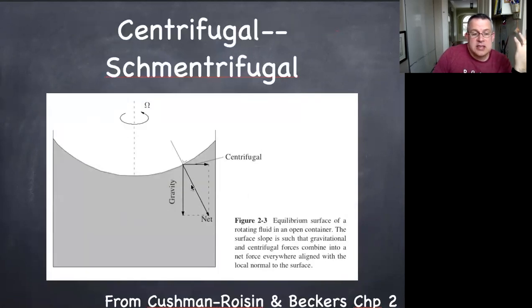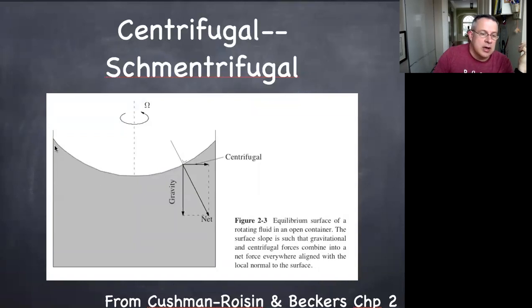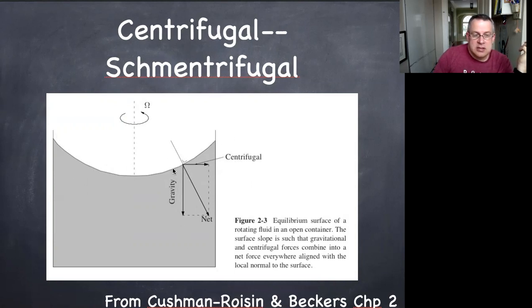What about the rotating tank? Same deal. Gravity is parallel to the rotation axis, and centrifugal force is always directed outward away from the rotation axis. The net direction is perpendicular to the surface. At that point on the surface, if it weren't like this, fluid could flow outward in response to centrifugal force, or inward if the surface were too steep. In a non-moving hydrostatic situation with gravity and centrifugal force, we get a parabolic surface — gravity pointing down, centrifugal pointing out, and the net perpendicular to the surface.